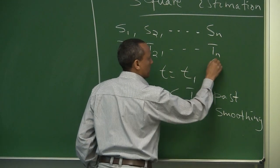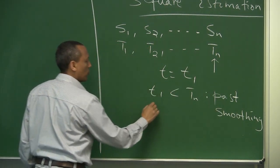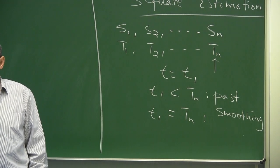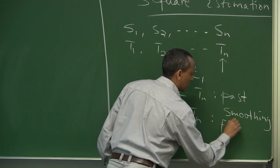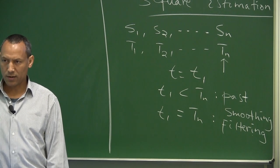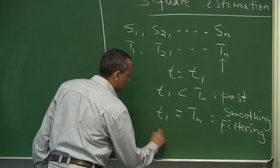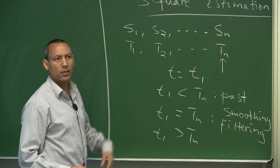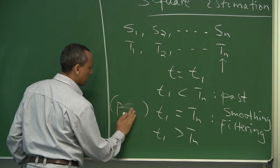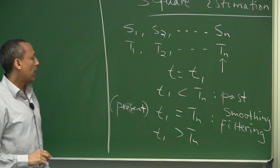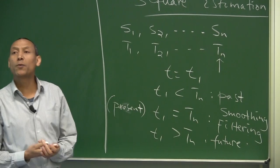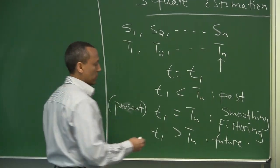If we are interested at time tn — so if t1 is equal to tn — in estimation theory this is called filtering. On the other hand, if t1 is greater than tn, that means we are looking in the future. This one is the present, and this one is the future. The problem we are dealing with is prediction.